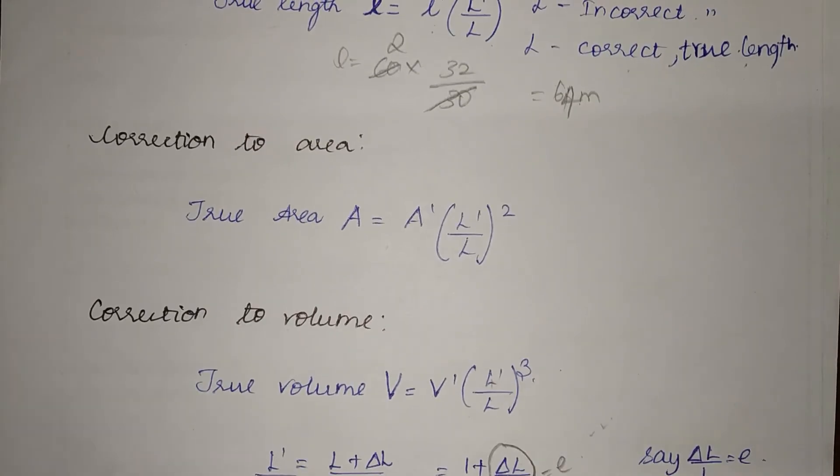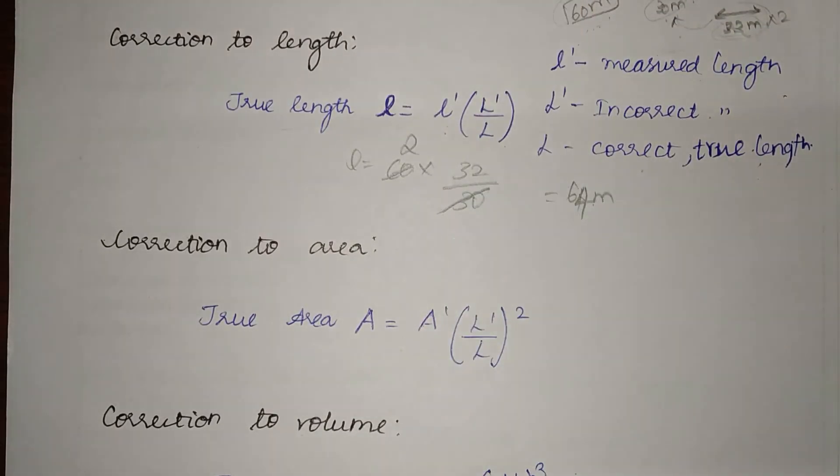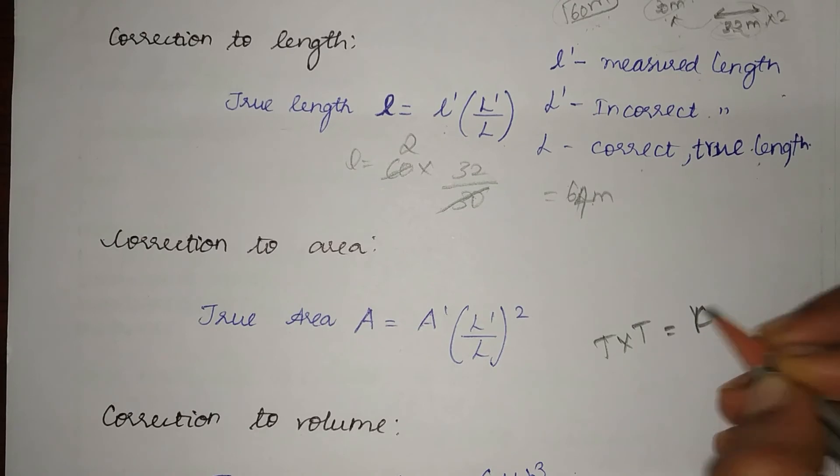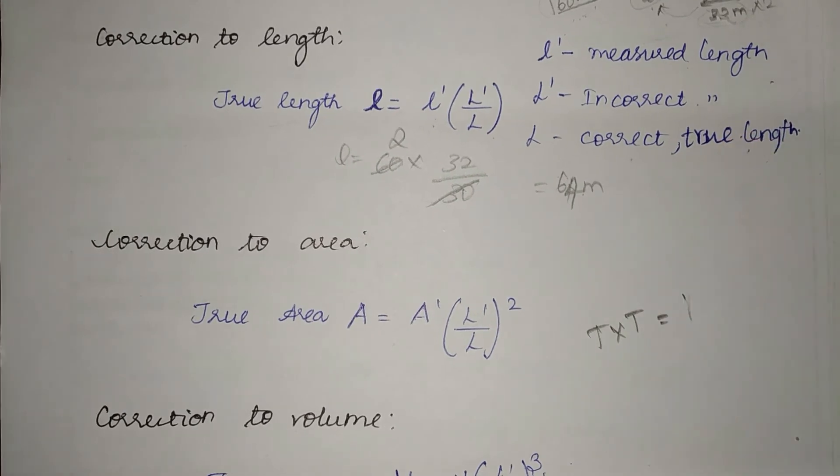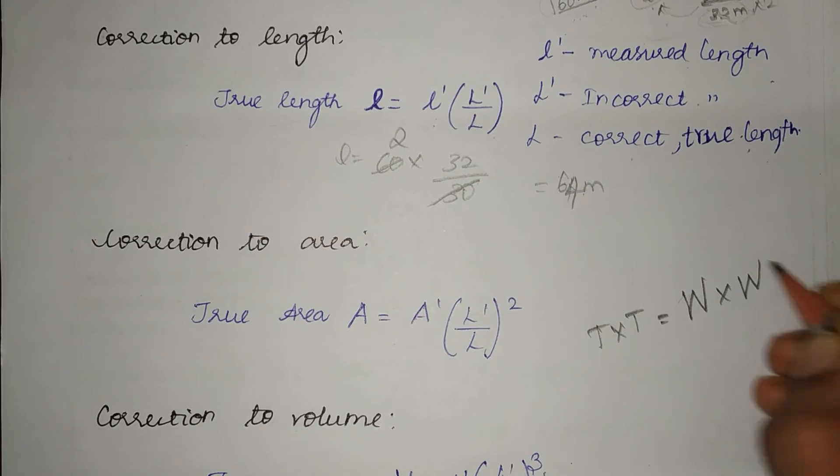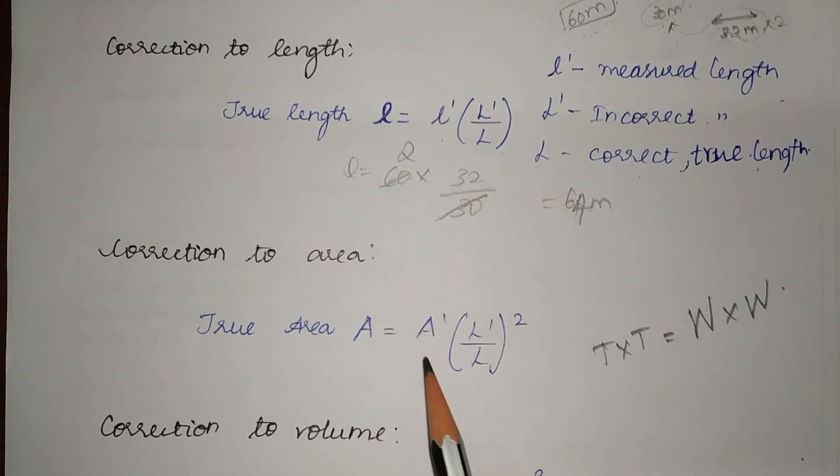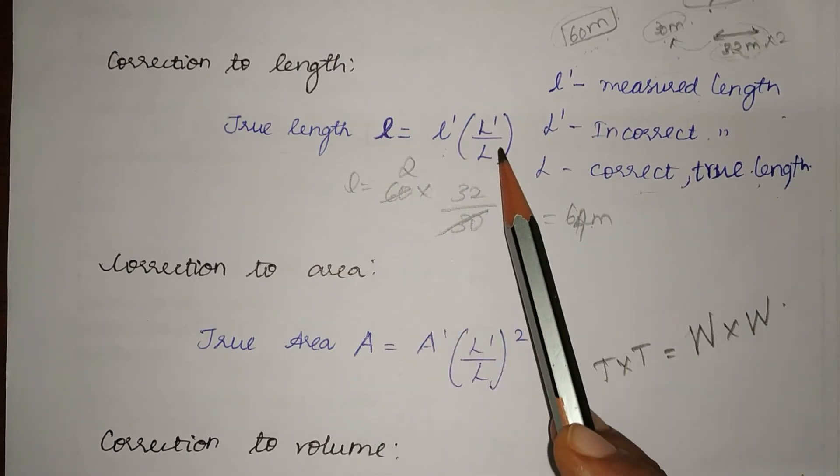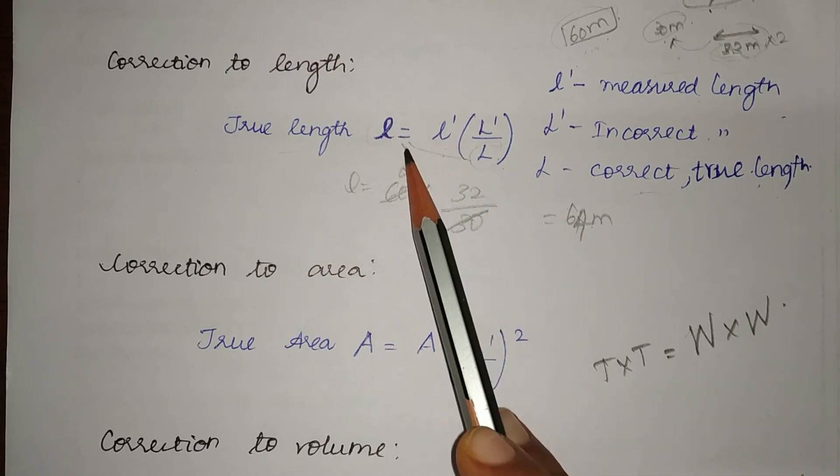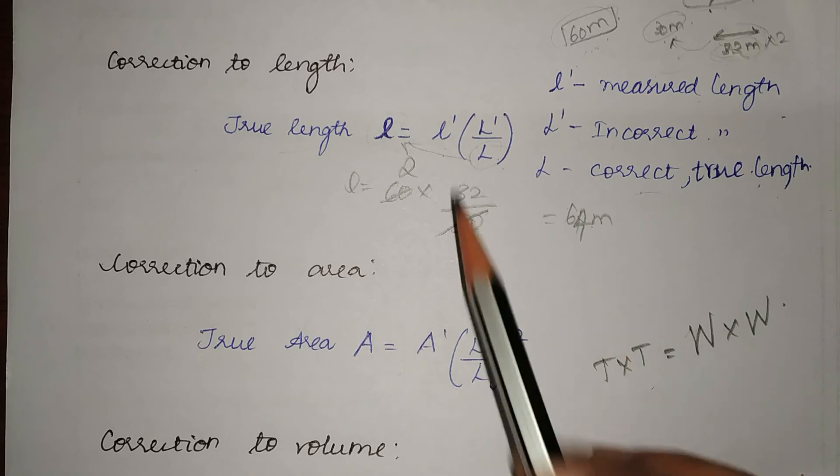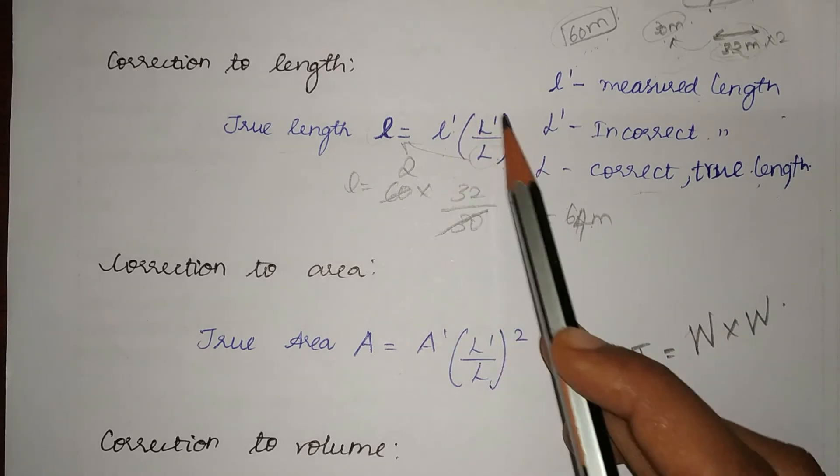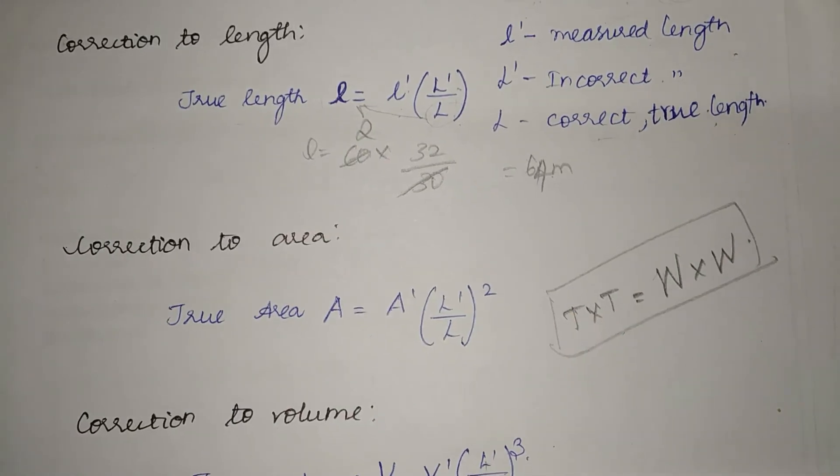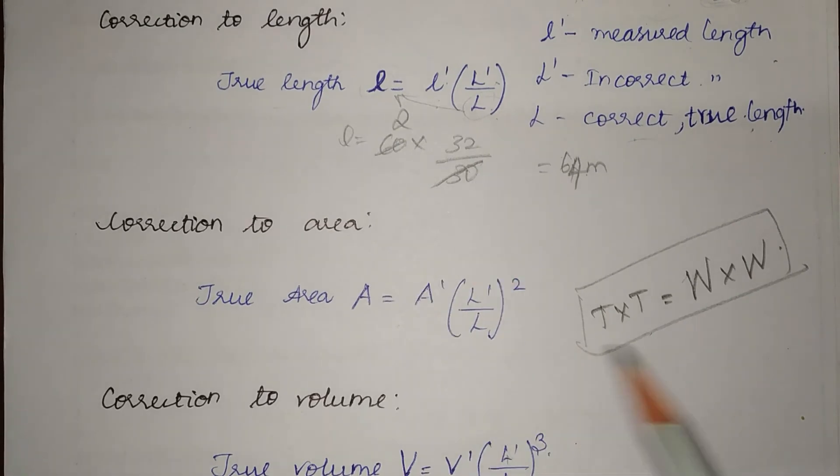I will throw in a quick tip. These formulas are easy to remember if you keep this in mind: wrong times wrong equals true times true. You can see it from this example. This L is the true length. So when you bring L here it becomes true times true which equals wrong, the incorrect length times the measured length which is also incorrect. Keep this formula in mind. This will help you to remember the other formulas.